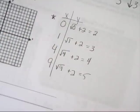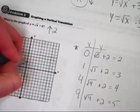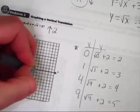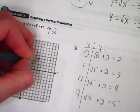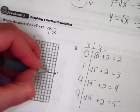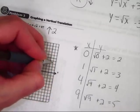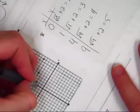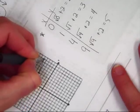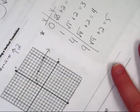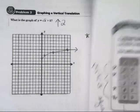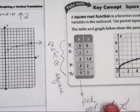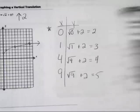Let's take our points and plot them on our graph: (0, 2), over 1 up 3, over 4 up 4, over 9 up 5. Look how the graph has that parabolic shape we've always seen — that's because these are the inverse of a quadratic. Take a look at your graph versus the original. Can you see how this one has been moved up 2 units from the origin? That's because of that plus 2 at the end.